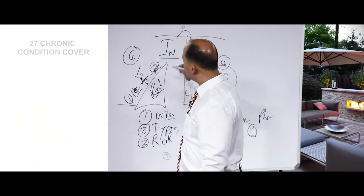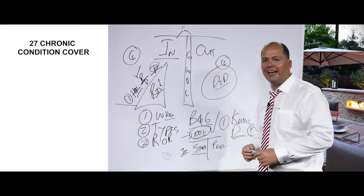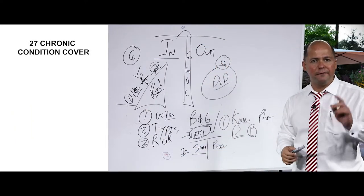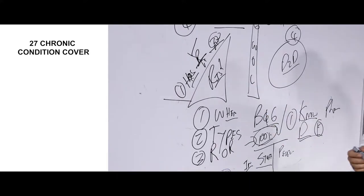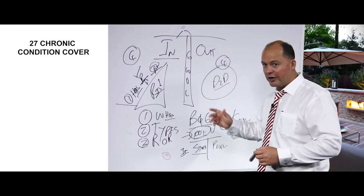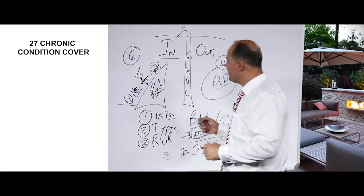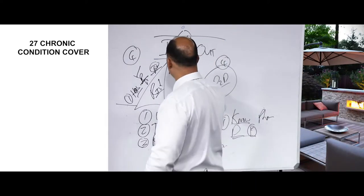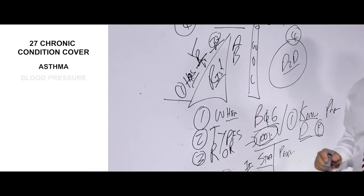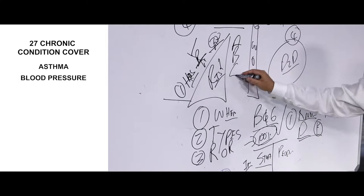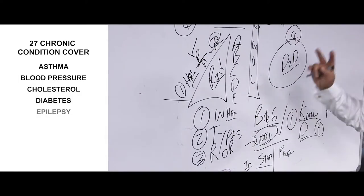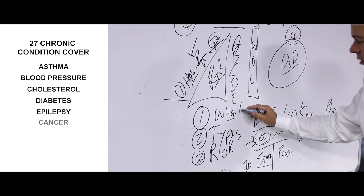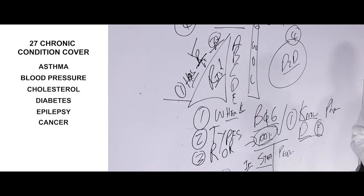The government says all medical aids must cover a fixed list of 27 chronic conditions. I call it the ABCD of chronics. On the list are things such as A — asthma, B — blood pressure, C — cholesterol, D — diabetes, E — epilepsy, and K for cancer. Those are the big six.